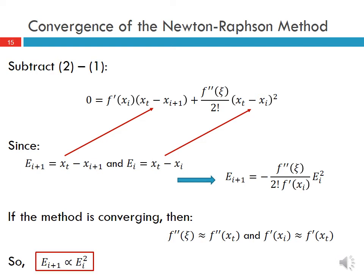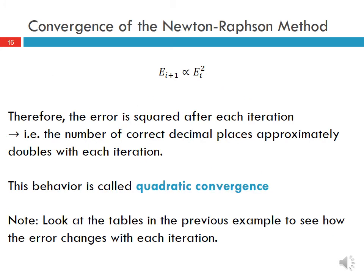This means the error at iteration i plus 1 is proportional to the error at i squared. The error is effectively squared after each iteration, so the number of correct decimal places approximately doubles with each iteration. This is called quadratic convergence, and it is why the Newton-Raphson method converges so quickly. You can check the tables in the previous example to see this pattern.